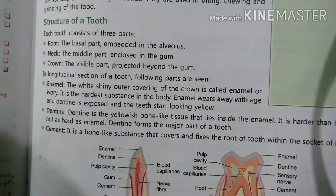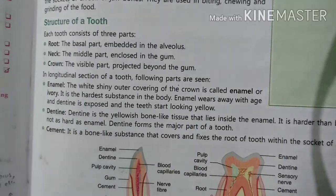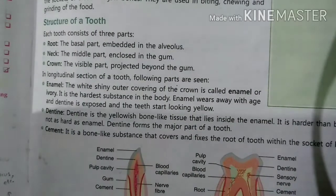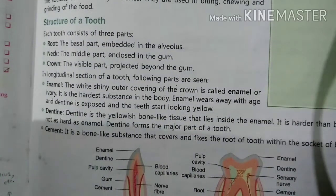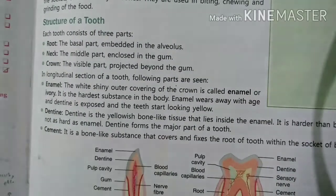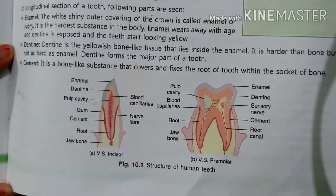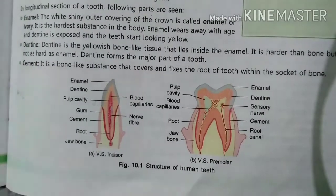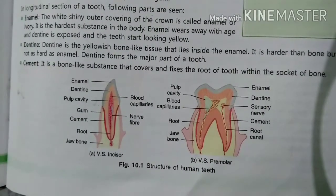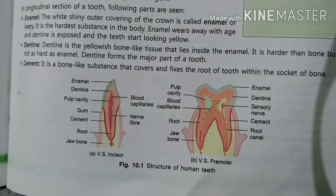Next is cement. Cement is a bone-like substance that covers and fixes the root of the tooth within the socket of the bone.